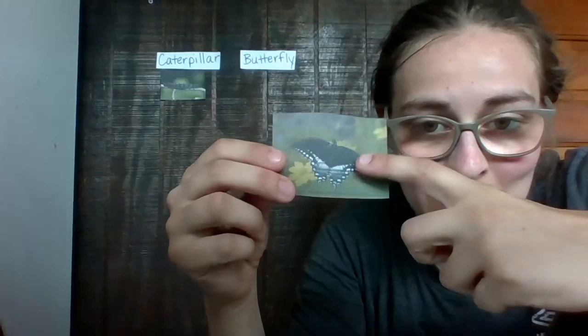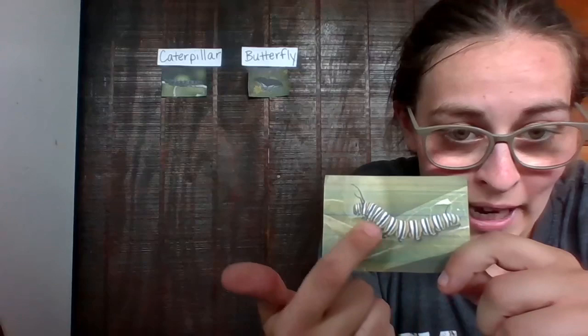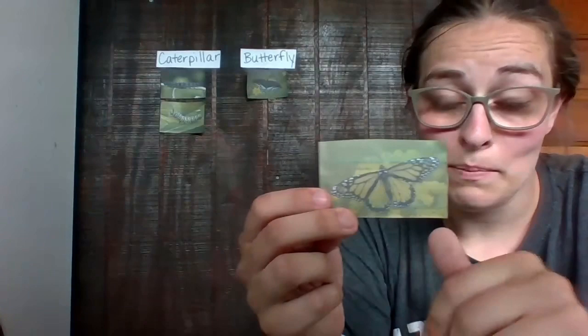The next one is one we see a lot around here. This is called a monarch. These are monarch caterpillars. They've got white and yellow and black stripes. Monarchs turn into these guys. These are orange and they have white dots. They're very big and they're very pretty, and we see a lot of monarchs around here.